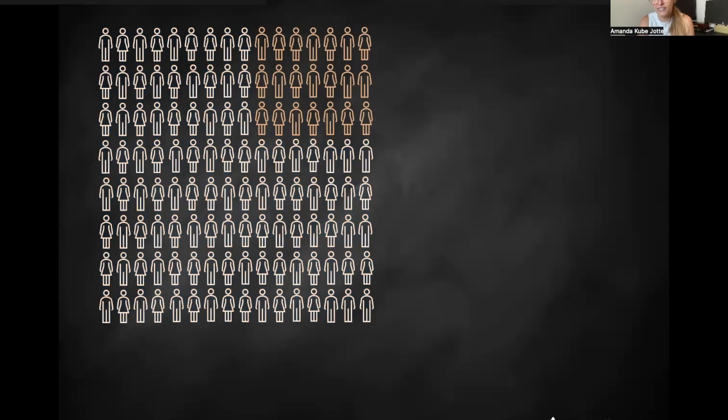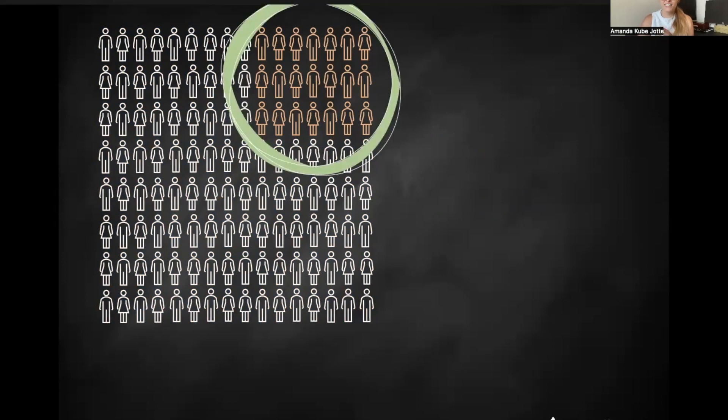So statistical inference is about what happens when you can't do a census to figure out what you want to learn. In those cases, we usually just get a sample of that population. So that sample is just a subset of that broader population you want to learn about. In this case, we're looking at the orange group, when our population is the entire white group on this slide. So this is our sample.